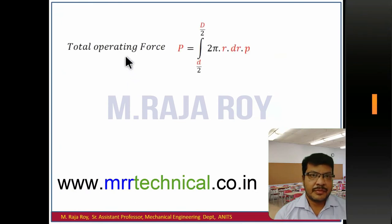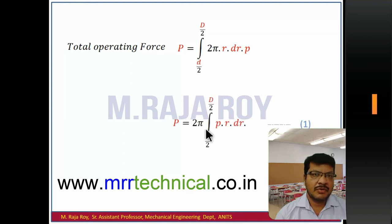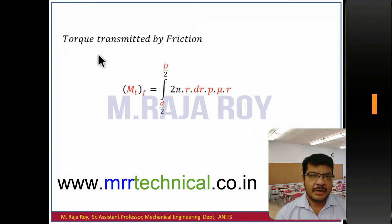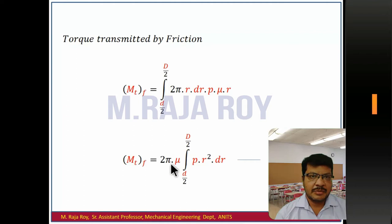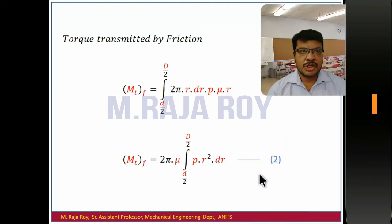Taking the operating force equation and integrating from d/2 to D/2, since 2π is constant it is taken out of the integration. This gives us Equation 1. For torque transmitting capacity, integrating from small d/2 to capital D/2, with 2π and mu both constant taken out of the integration, we get Equation 2.